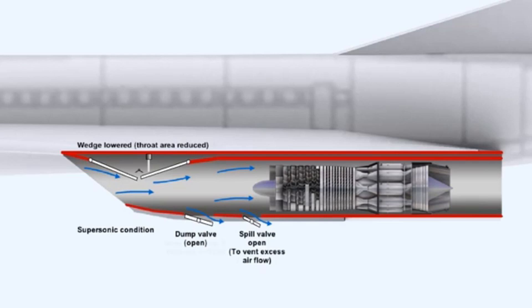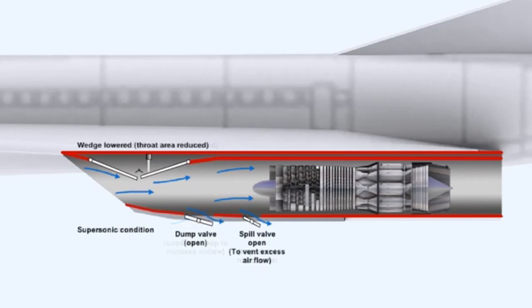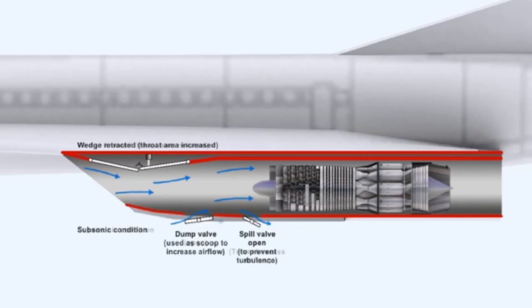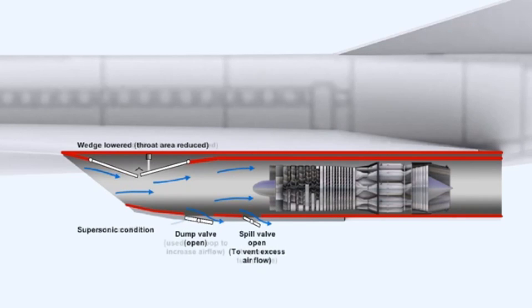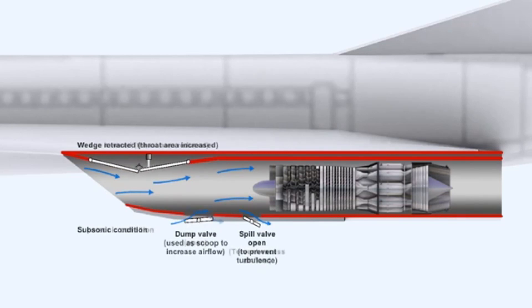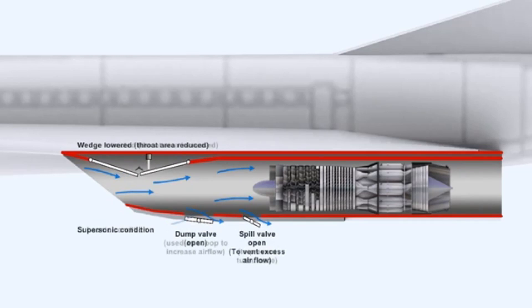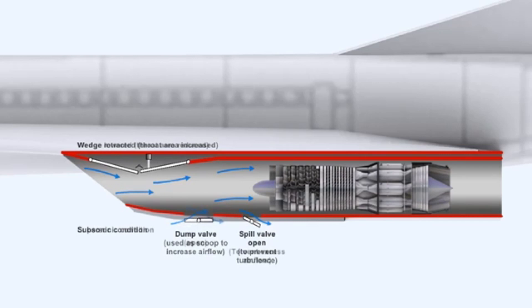For sustained speeds at or above Mach 2, the convergent-divergent diffuser was modified to use variable ramps to control the airflow into the engine. The angle of the variable throat area intake automatically varies with the aircraft's speed and positions the shock wave to decrease the air velocity at the engine inlet and also maintain maximum pressure recovery within the inlet duct.